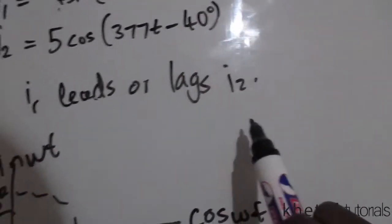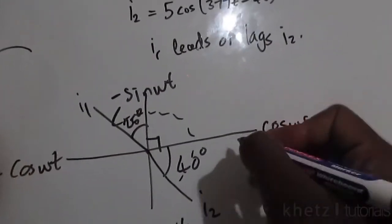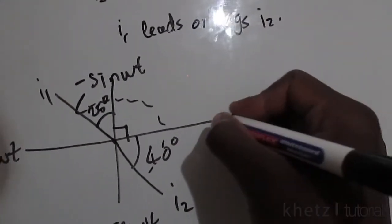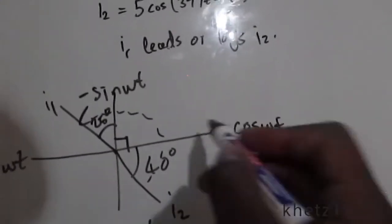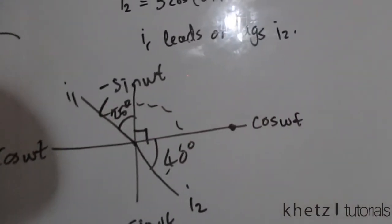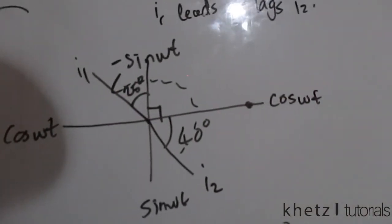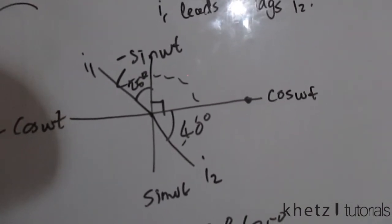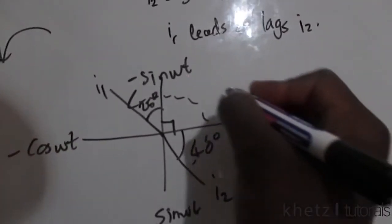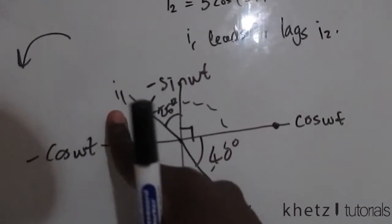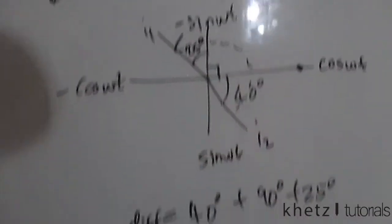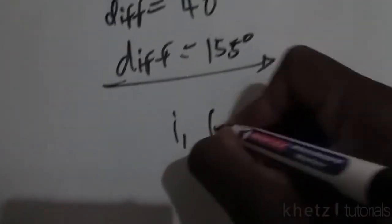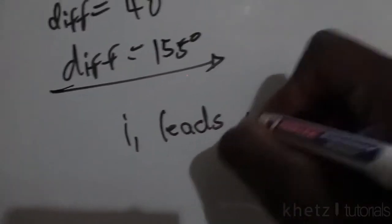So to answer this, you start at this point and you go around this diagram, and the first line which you encounter is the one which leads. So as we go around in the anti-clockwise direction, you'll see that we encounter i1 first, which means i1 leads i2.